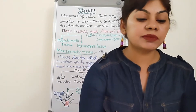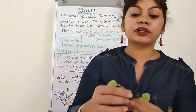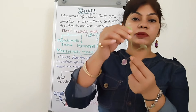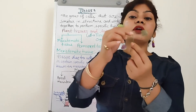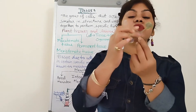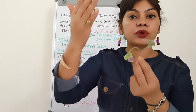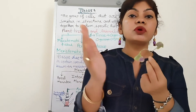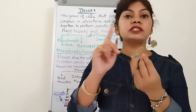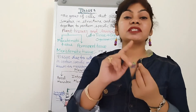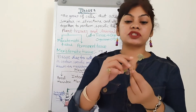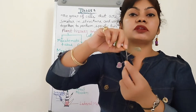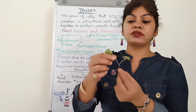Lateral meristem is a very thin ring-type circular structure. If this plant grows, the stem will increase in width. So the girth — the width of the stem — is due to lateral meristem.